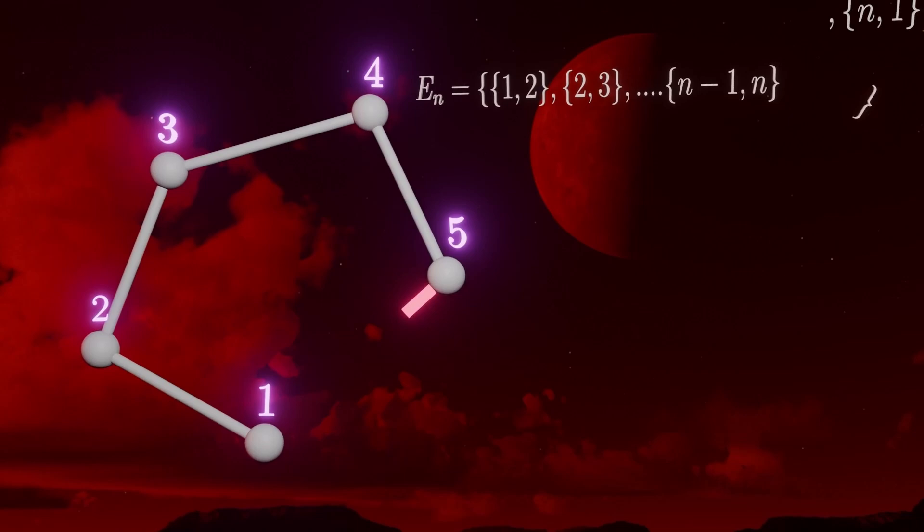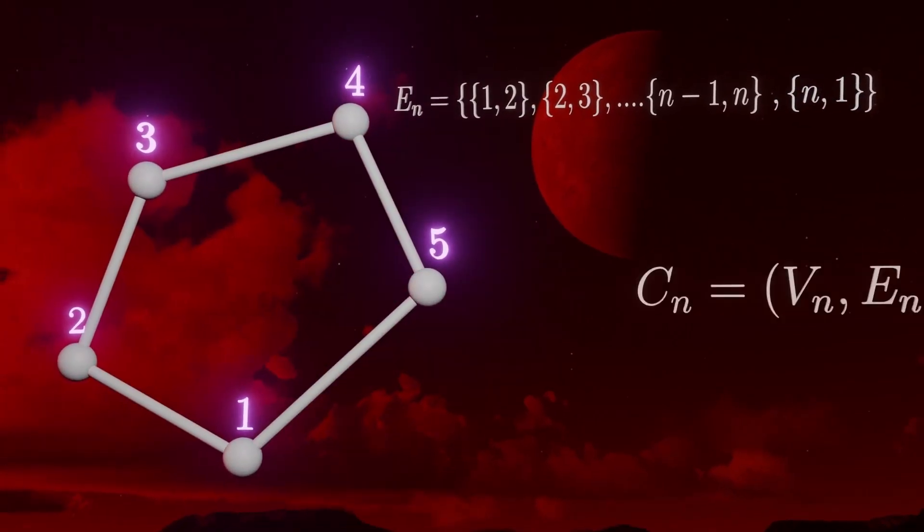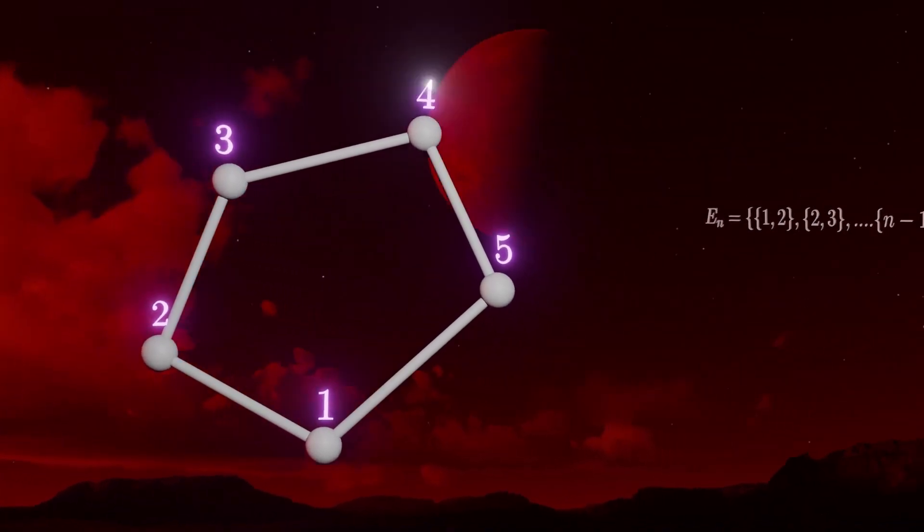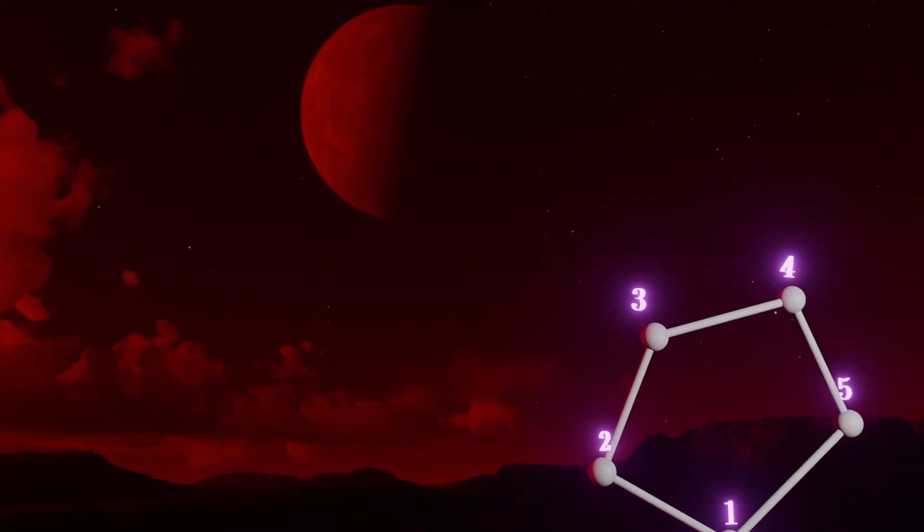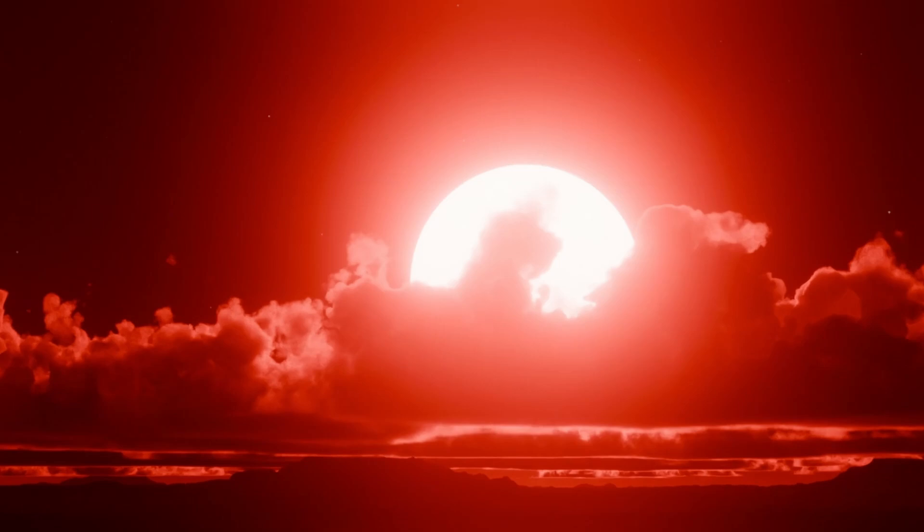So this is a 5 cycle, C5. And in general, the cycle with n vertices, we call Cn. And now we say this has length n. Something we'll see a lot coming up that we need to be aware of is that properties of cycles often depend on whether the number of vertices in the cycle is odd or even. So it's standard convention to just call these odd or even cycles.